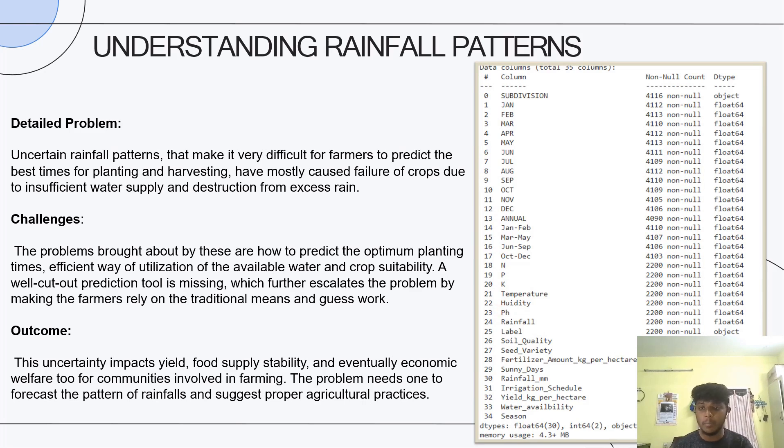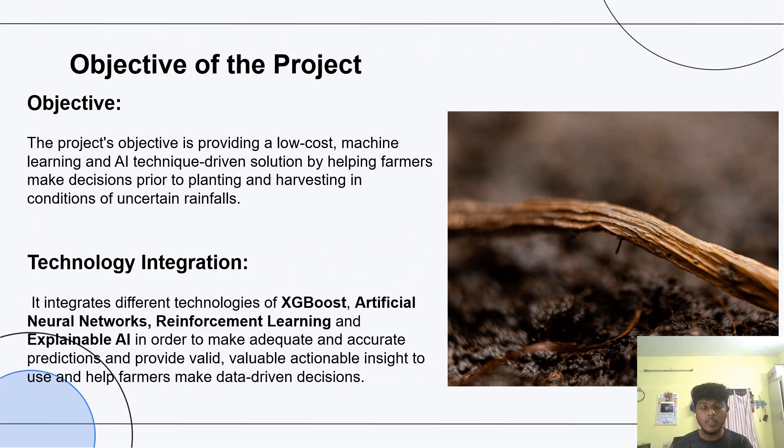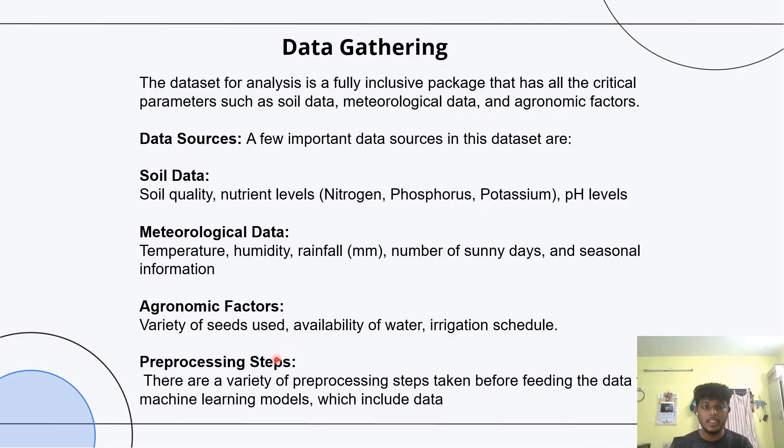The objective of the project is to use different AI and machine learning models to provide optimal schedules for agriculture and crop management. We extracted different features from various data sources.